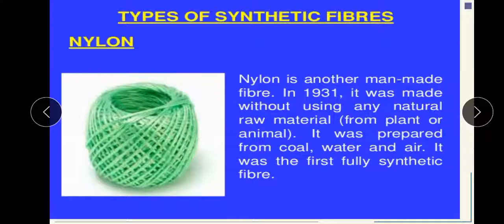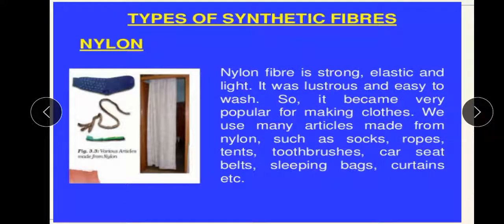Nylon is another man-made fiber, found in 1931. There is a difference between rayon and nylon: rayon is made from wood pulp, but nylon is made without using any natural raw materials. We can say that it is purely synthetic. It was prepared from coal, water, and air. It was the first fully synthetic fiber.